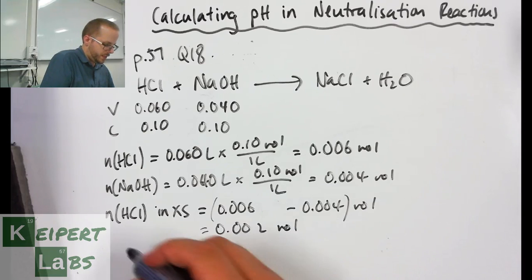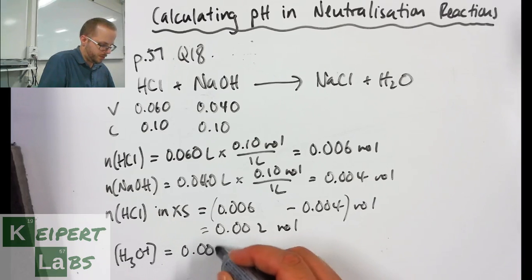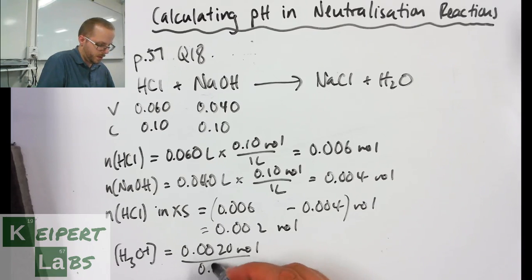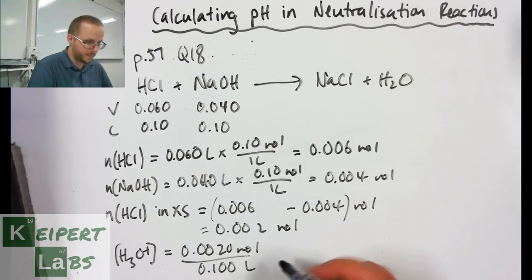So we need to again turn this into a hydronium ion concentration. We have 0.002 moles in a combined volume which is now 100 mL or 0.10 litres, and so that gives us 0.02 moles per litre.